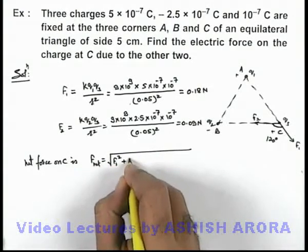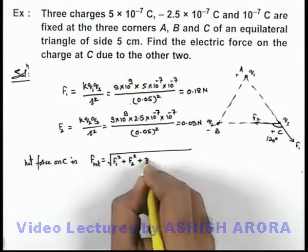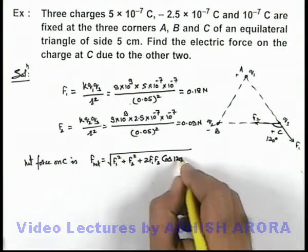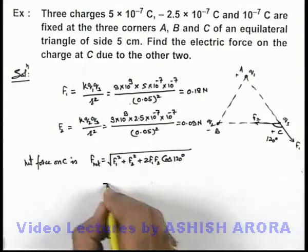That is √(F₁² + F₂² + 2·F₁·F₂·cos θ), where θ is 120 degrees.